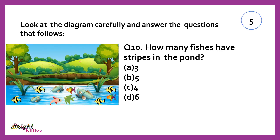Look at the diagram carefully and answer the questions that follow. How many fishes have stripes in the pond? Counting: 1, 2, 3, 4. So the answer is 4.